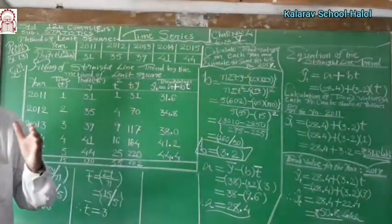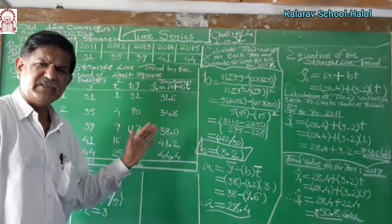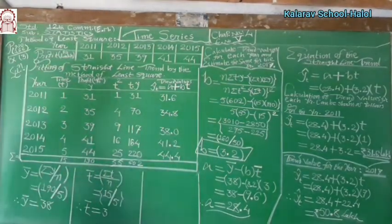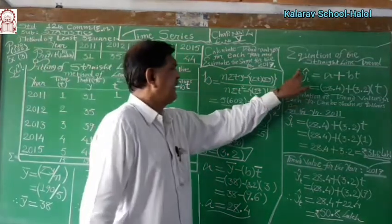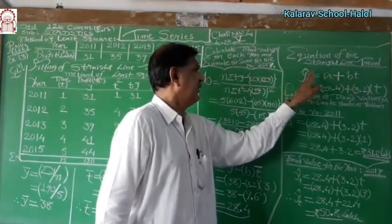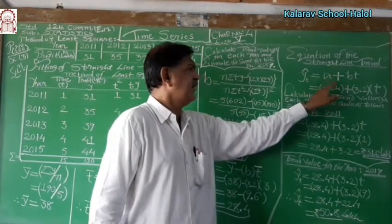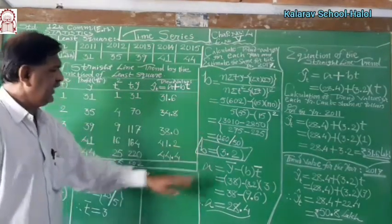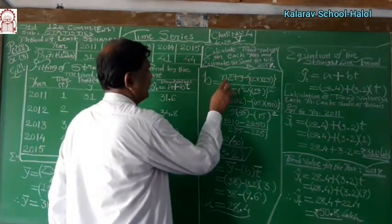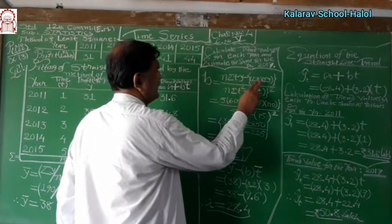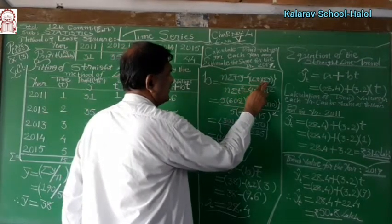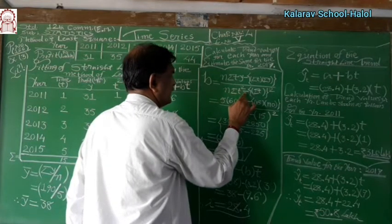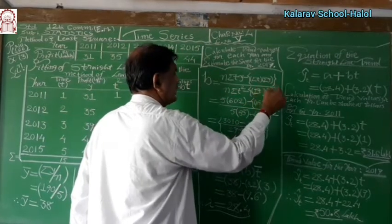This is the most important method of this chapter — time series analysis — known as the method of least squares. The equation of the straight line trend is given by Y-cap-T equal to A plus B times T, where A and B are constants.